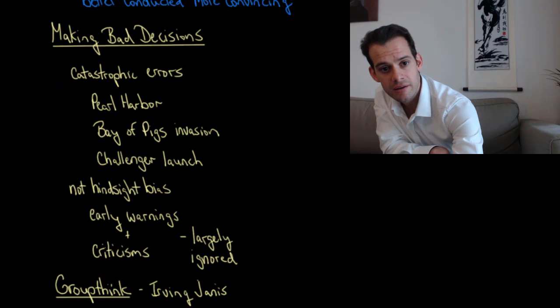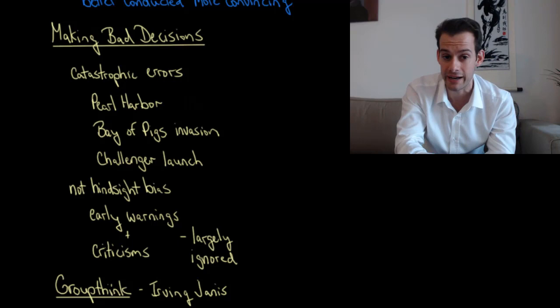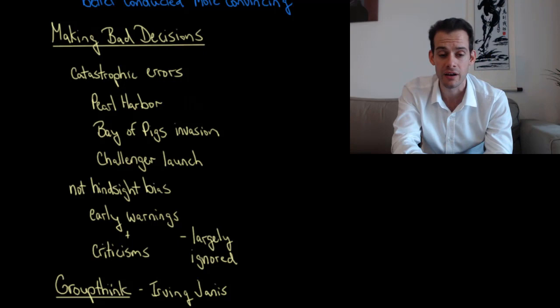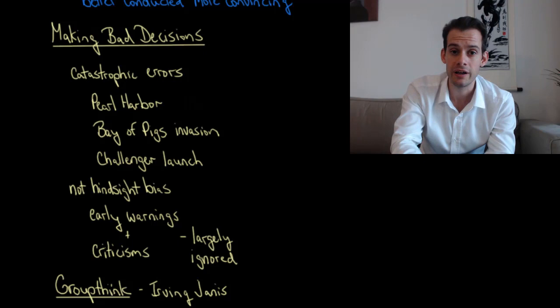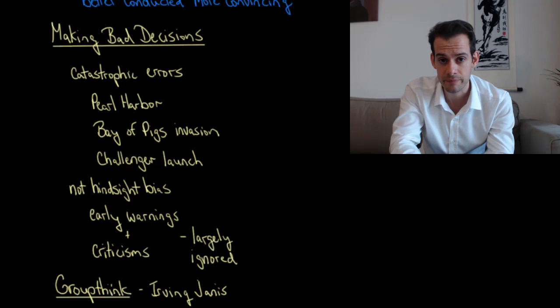Now we also see that groups occasionally make very bad decisions, worse decisions than individuals in those groups might have made. And we can find catastrophic errors of group decision making in things like not being able to predict the attack at Pearl Harbor or the botched Bay of Pigs invasion or the failed Challenger launch.